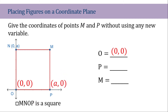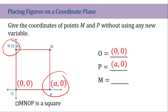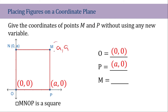The X coordinate of P would be A, because from O to P should measure A since this is a square. That gives us P = (A, 0). Since we have the coordinates of N and P, we can now easily find the coordinate of M. The X coordinate is A and the Y coordinate is A as well. So M has a coordinate of (A, A).